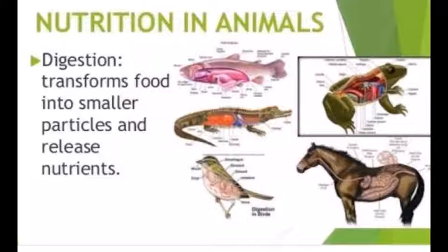The three types of heterotrophic nutrition are: saprotrophic nutrition, parasitic nutrition, and holozoic nutrition.